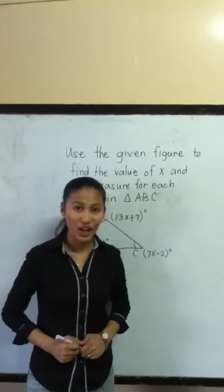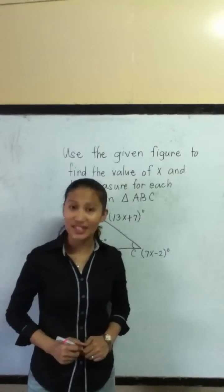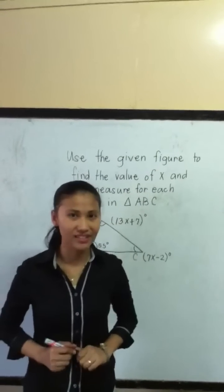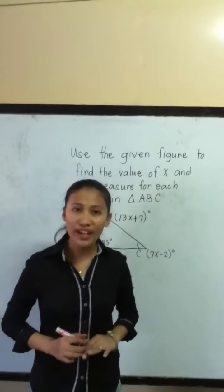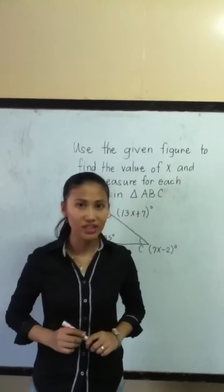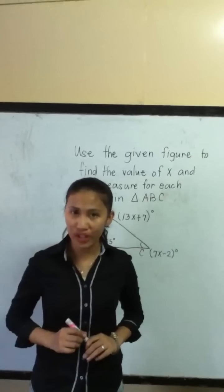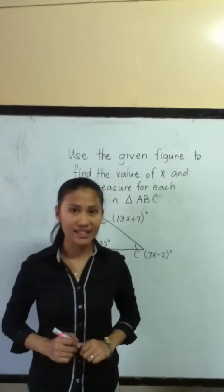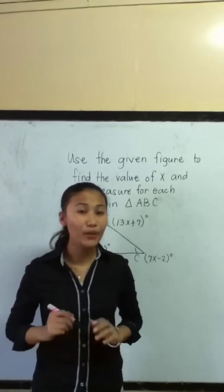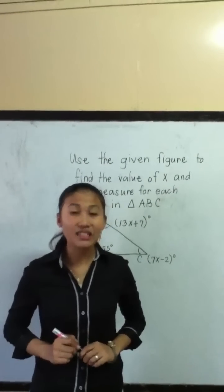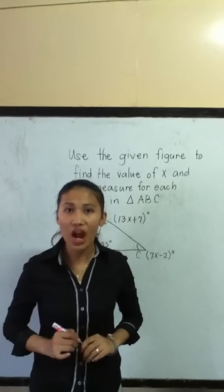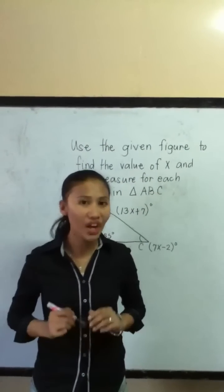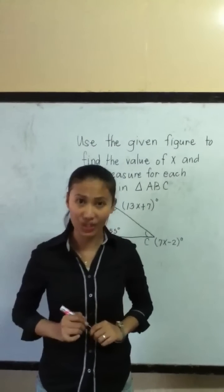A pleasant day to all of you. Today we're going to focus on triangles. A triangle is a three-sided polygon which has three corners that we call angles, and we have a theorem that the measure of those angles is equal to 180 degrees.